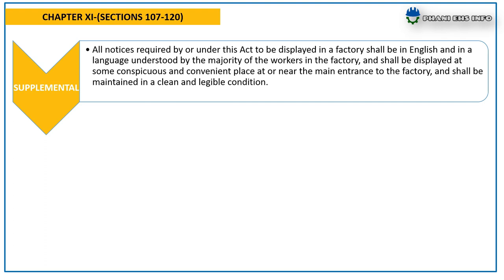Chapter 11, Supplemental, covers sections 107 to 120. All notices required by or under this act to be displayed in the factory shall be in English and in a language understood by the majority of the workers in the factory, and shall be displayed at some conspicuous and convenient place at or near the main entrance to the factory, and shall be maintained in a clean and legible condition.